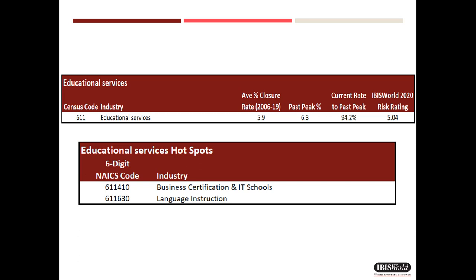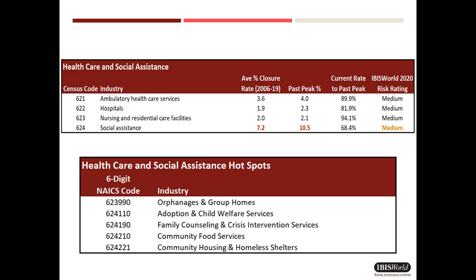Although not singled out here, I nevertheless wonder about the fate of small private schools — primary, secondary, plus colleges and universities — many of which rely on expensive tuitions and other fees. In the healthcare and social assistance group, only the social assistance subgroup has had high business death rates since 2006.